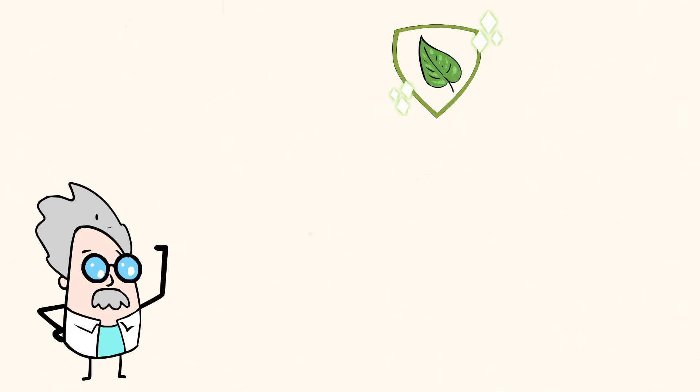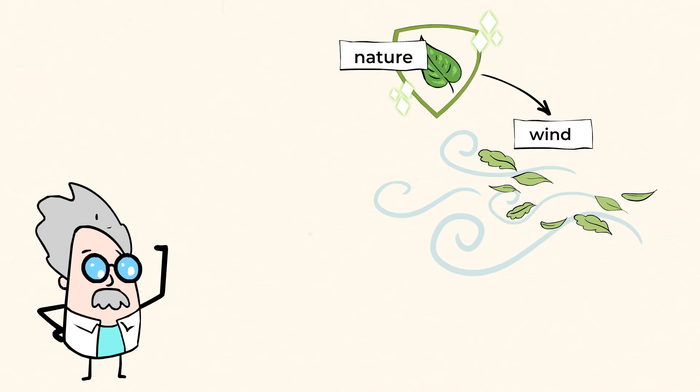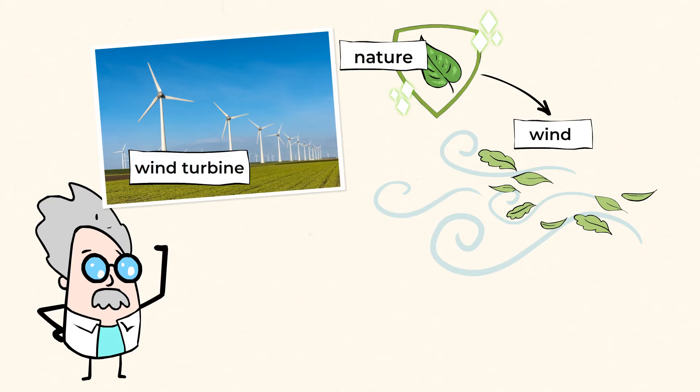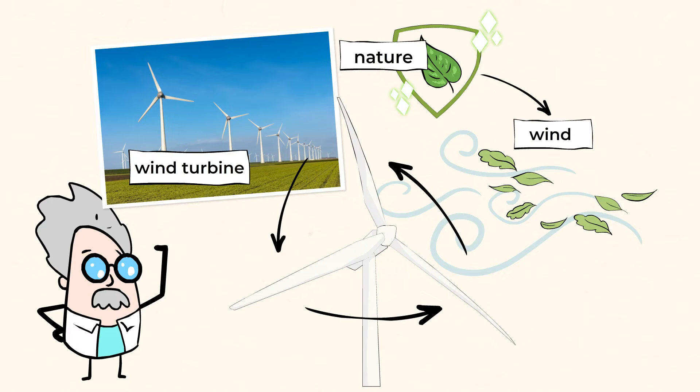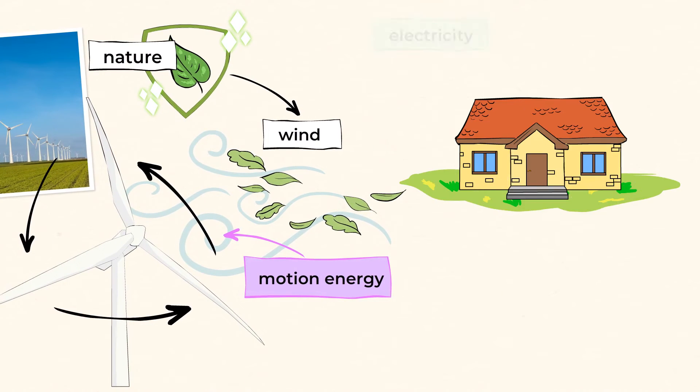And humans have also figured out how to use energy from other places in nature, like the wind. Look at this wind turbine, for example. The wind causes the blades of the turbine to move. And this is called motion energy, because it's made by movement or motion. That motion energy is then used to create electricity to power homes and buildings in that area.